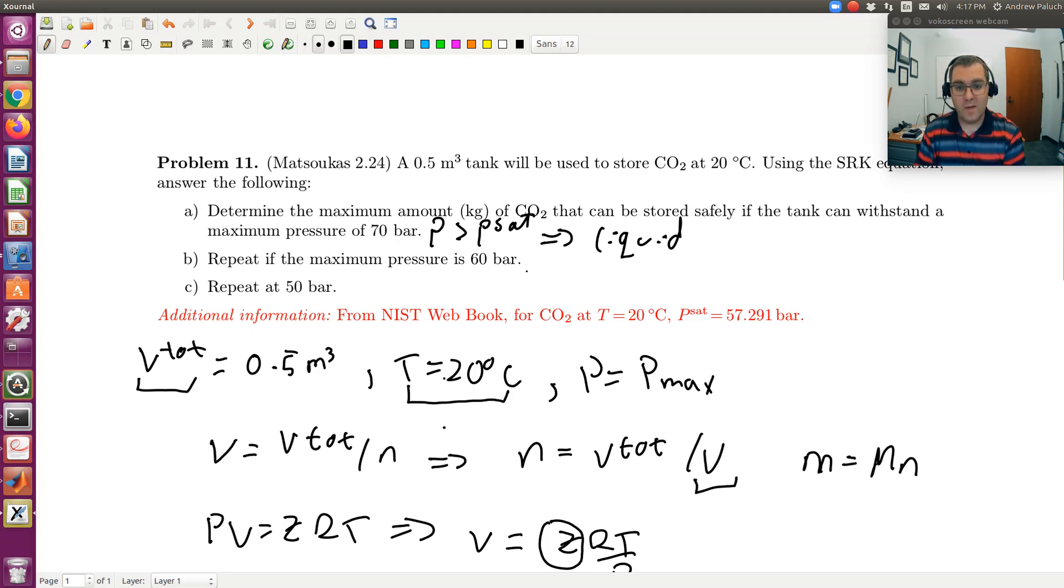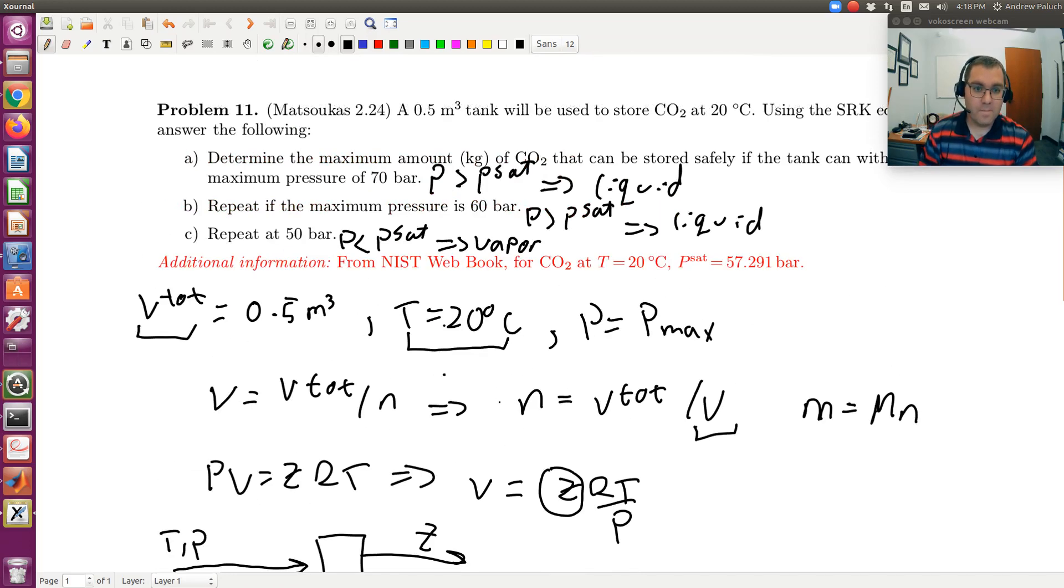Now if we repeat at 60 bars, alright, now it's still P is greater than PSAT. So I'll still have a liquid. So I would choose the smallest Z if I get more than one real root. But now here I have pressures 50 bars. So if my pressure is less than PSAT, so now I have P is less than PSAT at the same T. So I must have a vapor. So that's just going to help me choose my roots.